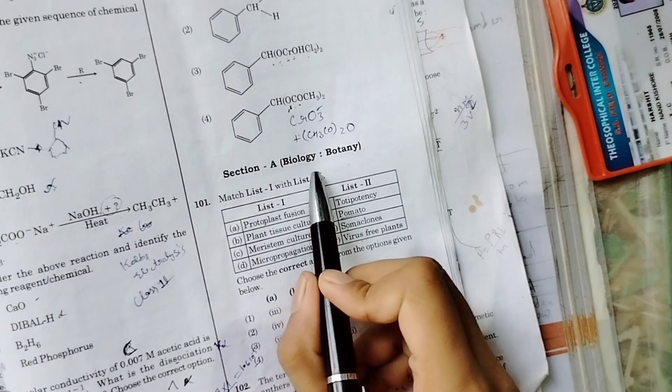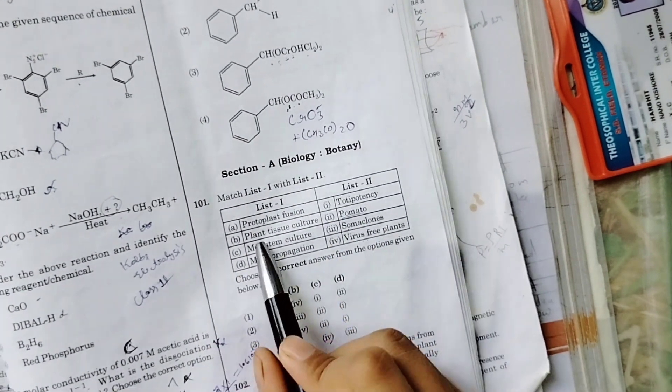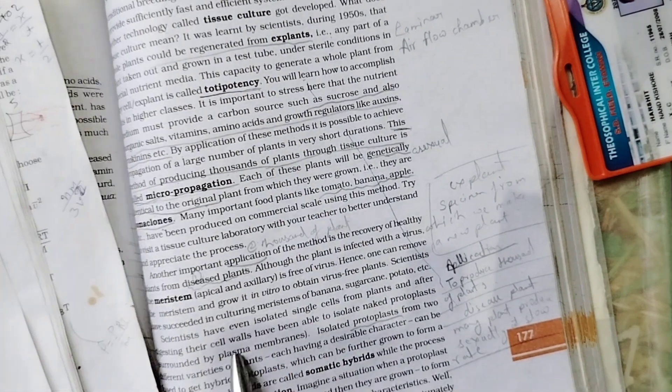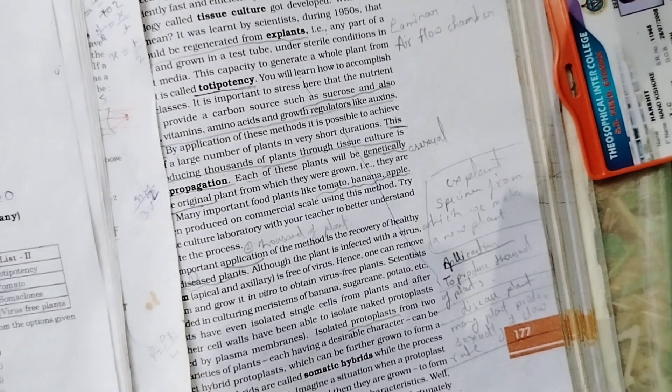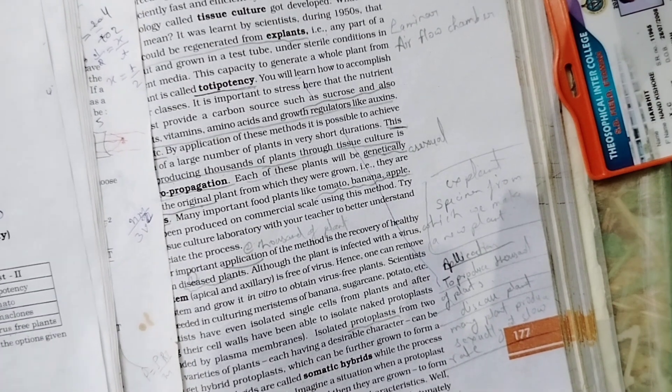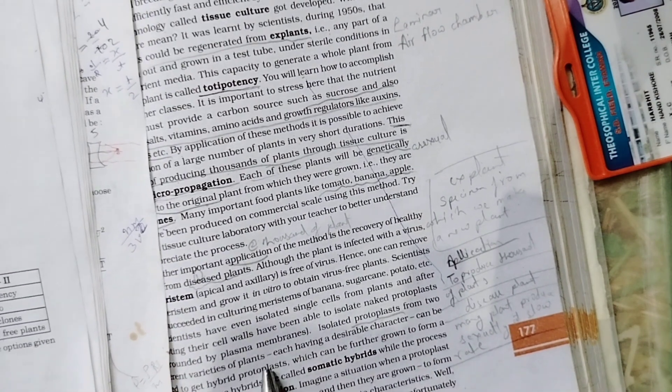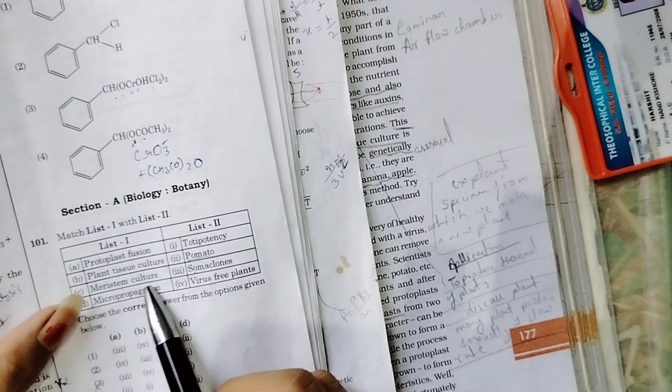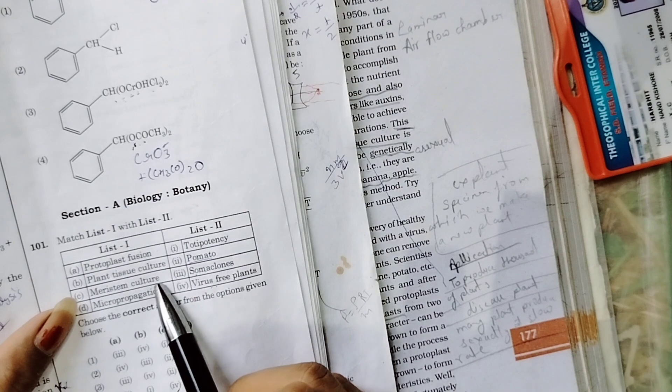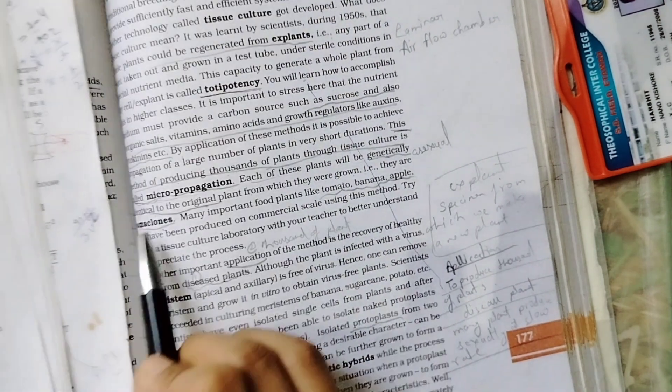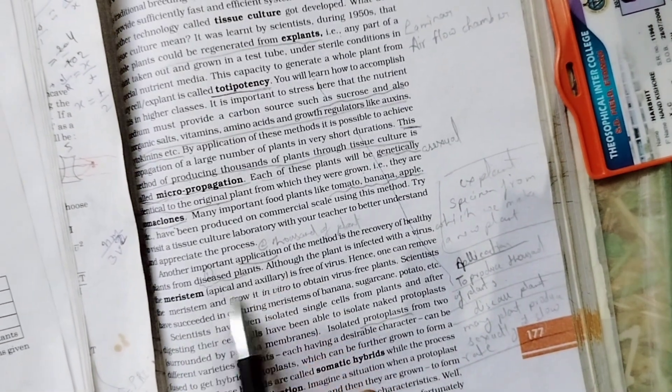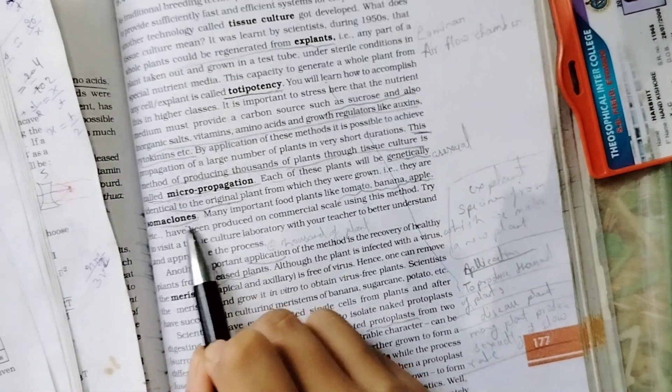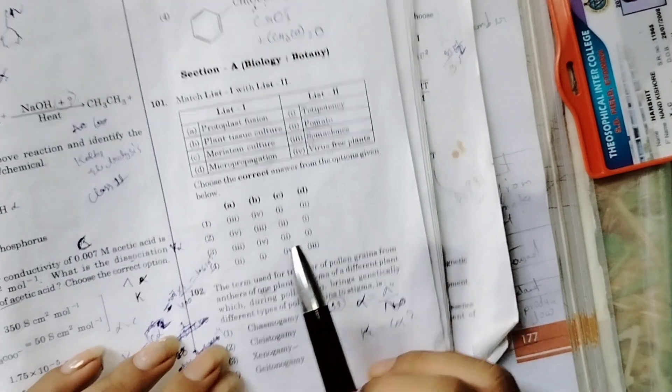Let's begin with the biology, botany section. So in this question, this is matching. Look in class 12th: protoplast fusion, isolated protoplast. Plant tissue culture, totipotency. And meristem culture - meristem culture means virus-free plant. And micropropagation, somaclones. Micropropagation, somaclones. So this will be for all.